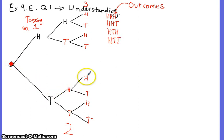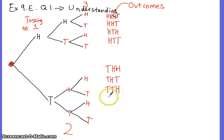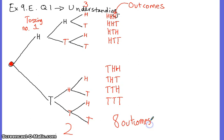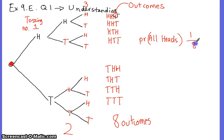It could come out as tail-head-head, tail-head-tail, tail-tail-head, or tail-tail-tail. So when you toss a coin three times, it could have one, two, three, four, five, six, seven — eight possible outcomes. No more, and it couldn't have any less. The probability of getting all heads is one out of a possible eight chances.